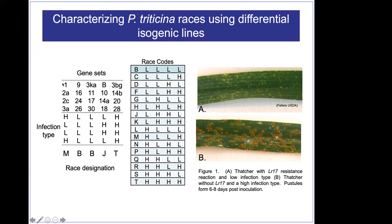You have a set of resistance genes, set up in sets of four. Based on how a particular collected isolate reacts to this group of resistance genes, the race is given a letter designation that helps us identify it. The TTKS system you see in stem rust is based on a very similar system. Basically, for a long time, this was the major biology we knew about the fungus.